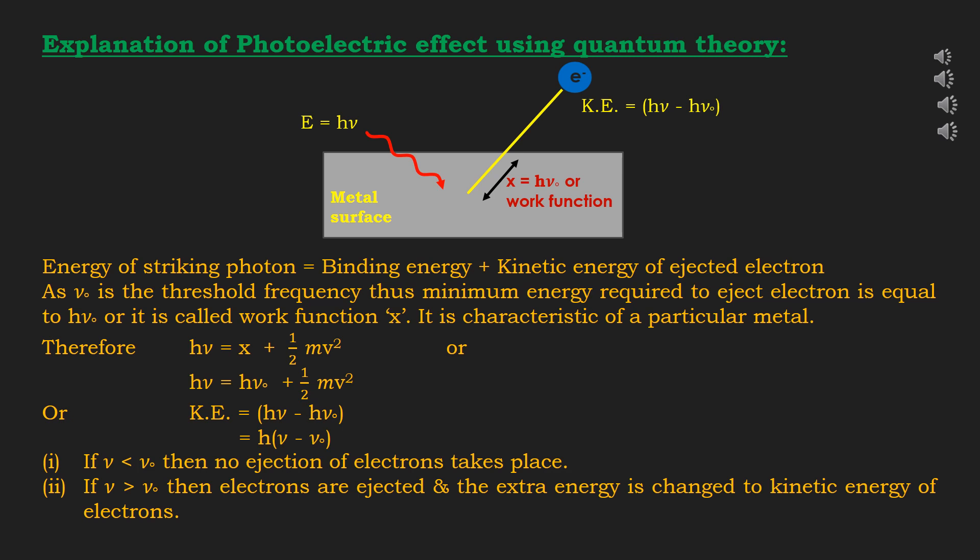After all this discussion, it was concluded that light has been regarded as waves to explain the phenomena of reflection, refraction, diffraction, etc. However, in order to explain black body radiation and photoelectric effect, Einstein regarded light as tiny particles called photons. In other words, light behaves like waves as well as like particles. Such a wave-like and particle-like nature of radiation is known as the dual nature of radiation.